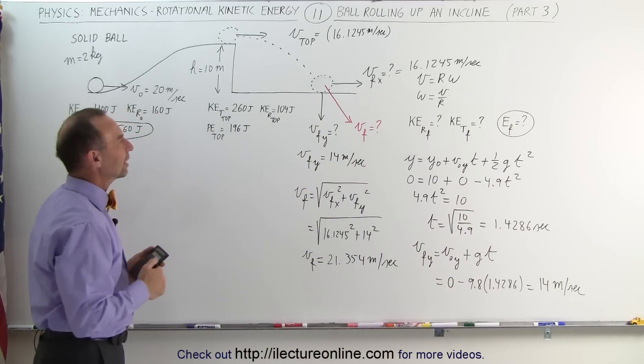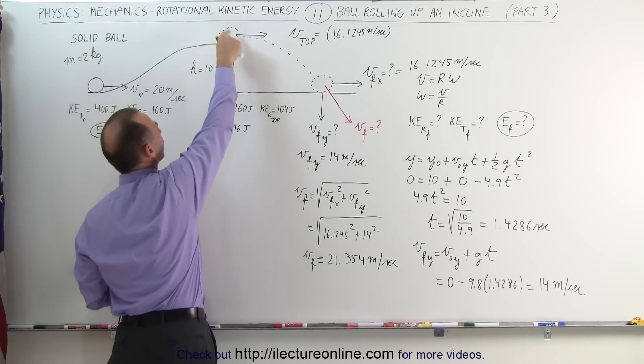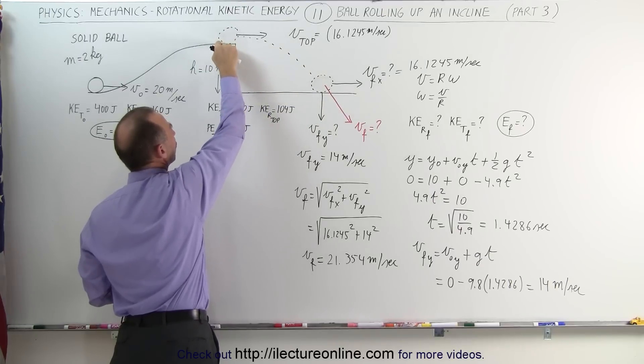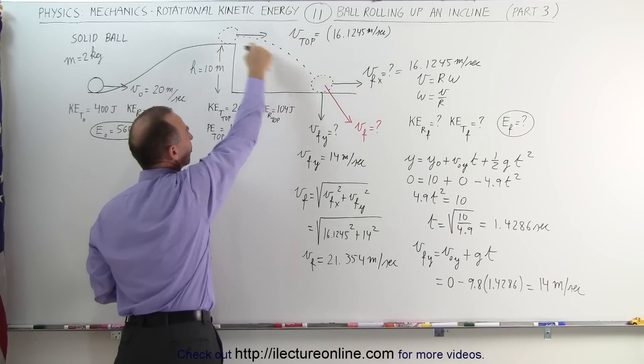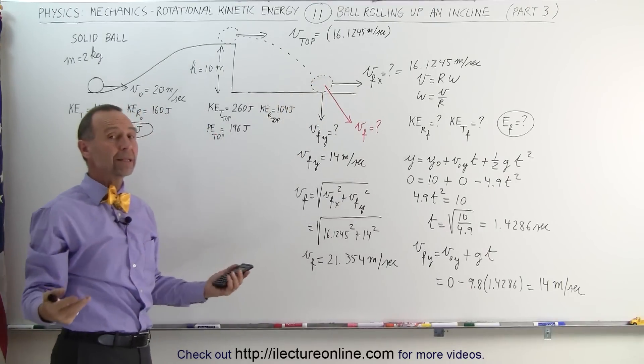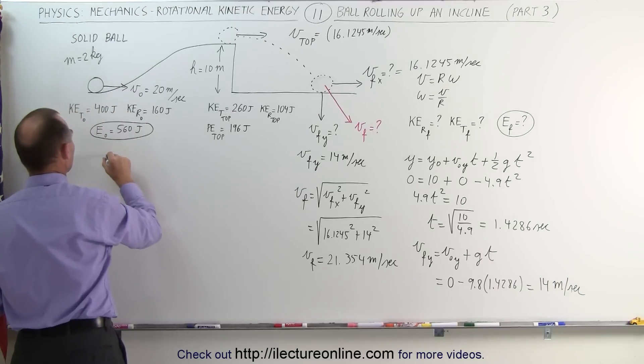Let's do the translational kinetic energy first. It had a certain amount of rotational velocity when it went off the cliff, and after it loses touch with the ground and it's flying through the air as a projectile, the rotational kinetic energy will remain constant.